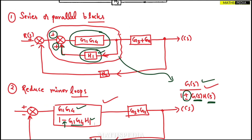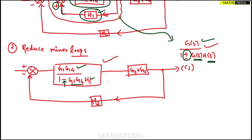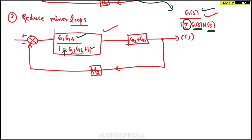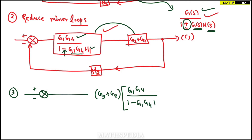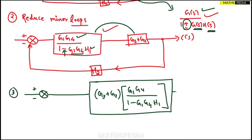Now observe that the reduced block G1·G4 / (1 − G1·G4·H1) and the block (G3 + G2) are again in series — directly connected. For the third step, applying the series concept means multiplication. So I multiply (G3 + G2) by G1·G4 / (1 − G1·G4·H1) to get one single combined block, with C(s) at the output.